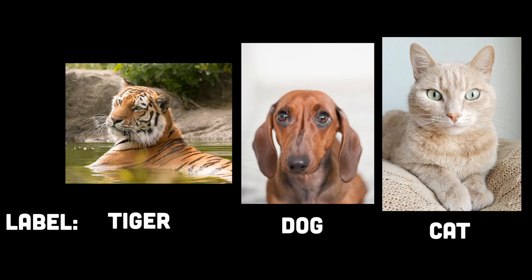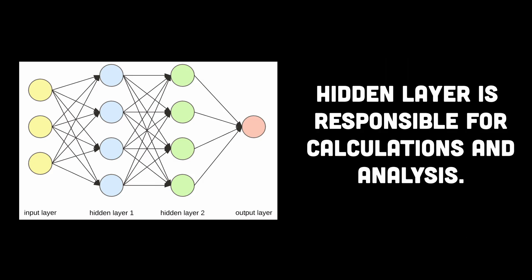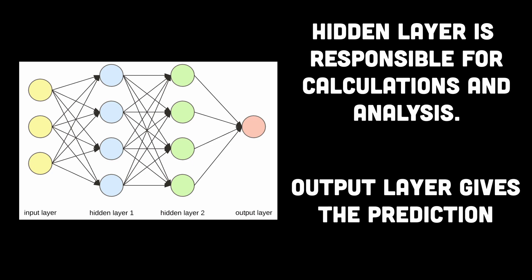In our example of the tiger image, the input will have something called a label or a target that tells our neural network which category it belongs to. The hidden layer performs a series of statistical calculations that investigate each of our examples from many different angles, and the output layer is responsible for evaluating different aspects of our examples.